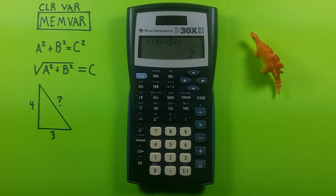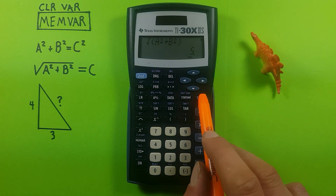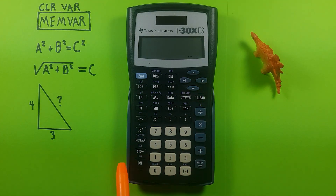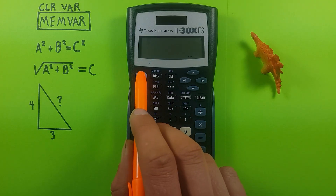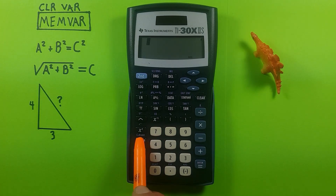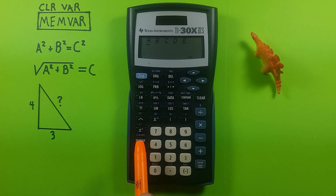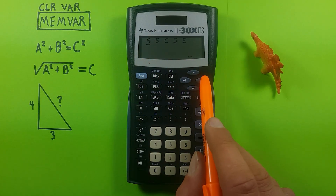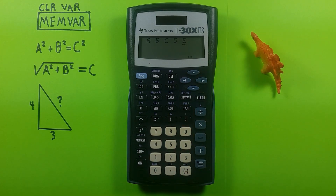If we're done with our saved data, we can clear the screen. And if we wanted to clear our data slots, we can use the second function of the memvar key — that is CLR VAR, or clear variables. Hit that, and if we go back into memvar, we can see we no longer have any data saved. They're open for our next equation. I hope this helps, and good luck on those tests. Goodbye.